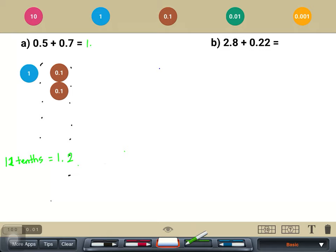So our final answer would be 1 and 2 tenths or 12 tenths. Now, how do I add this using arithmetic? Just like what I've been saying in the earlier video, don't forget to align your place values.